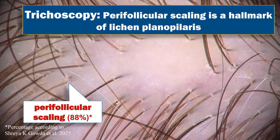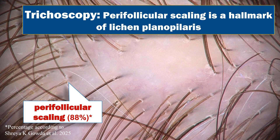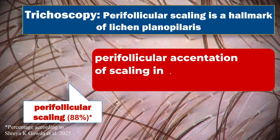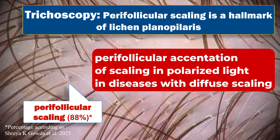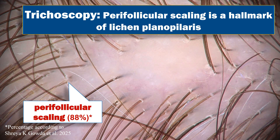We use trichoscopy, and in trichoscopy, perifollicular scaling is probably the most important feature in lichen planopilaris. However, there may be perifollicular accentuation of scaling also in other diseases, especially in polarized dermoscopes, where we may see scaling which looks like perifollicular scaling. So this feature alone is not sufficient.